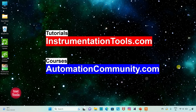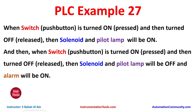Hello friends, welcome to Automation Community. Today in this video we are going to discuss an example in which we will control a solenoid and pilot lamp. Example 27: when switch is turned on and then turned off, the solenoid and pilot lamp will be on. Then when switch is turned on and turned off again, the solenoid and pilot lamp will be off and the alarm will be on.